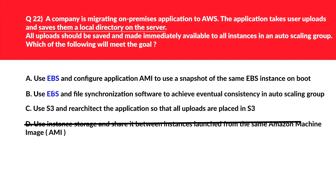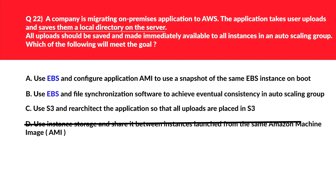Now let's look at options A and B together — both use EBS. Amazon EBS is like an external hard disk that can be attached to a maximum of 16 instances in the same Availability Zone using the EBS Multi-Attach feature. However, the question doesn't mention how many instances there are — there could be more than 16 — so these options will not meet the purpose.